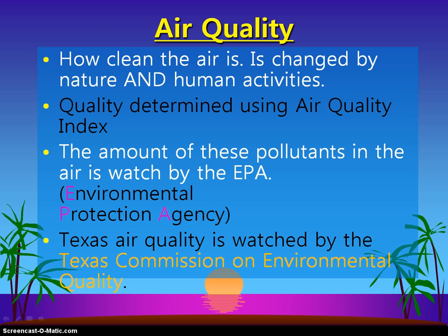We're going to be looking at air quality in this topic — the different types of pollutants and how they're managed. The EPA manages environmental pollution issues, looking at water quality, soil quality, and air quality. Each individual state also has its own government agency that focuses on environmental quality. Here in Texas, we have the Texas Commission on Environmental Quality Agency. They monitor things like vehicle emissions — that's why you get your vehicle inspected each year to meet state requirements — as well as factory emissions from industry.